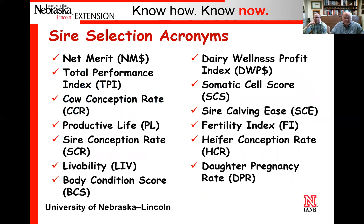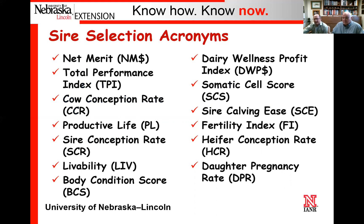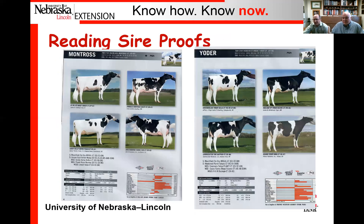Some of the things we'll be talking about in our sire selection — there are a lot of acronyms involved, things like net merit, total performance index. All of these are things your students should know and understand how they pertain to a sire selection application. Most of those things will be found on what we call a sire proof, and we want you to understand how to read a sire proof and answer questions based on them.